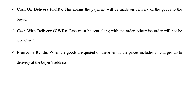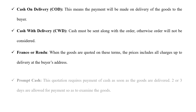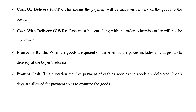The next type is Franco or Rendu. When goods are quoted on these terms, the price includes all charges up to the delivery at the buyer's address. When you pay the price of the product, all delivery charges, freight charges, and transport charges — everything — will be included in the price of the product itself. That is why it is called Franco or Rendu.